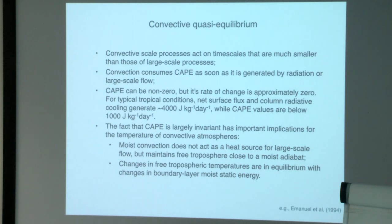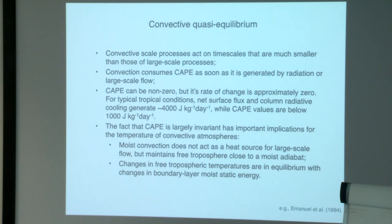The fact that CAPE is largely invariant means that, when considering large spatial averages and long time averages, moist convection—by being active almost all the time—really sets the temperature stratification of the tropical atmosphere, and it maintains the free tropospheric temperature close to a moist adiabat. This closely couples the temperature distribution in the free troposphere to the moist energy content in the boundary layer.